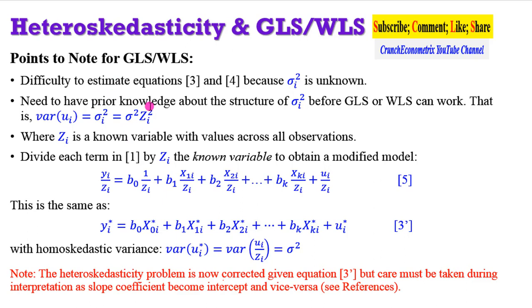In this instance, we are going to reconstruct the variance and multiply it by a known variable. This known variable is expected to have values across all observations, talking about an independent variable. So having the known variable, you divide the entire equation 1 by that known variable, as shown in equation 5. So this transforms the model to what you can see in equation 3 prime. So equation 3 prime is the same thing as equation 3 under the GLS and WLS approaches. But now we know the structure of the variance being depicted by a known independent variable. So once we can reconstruct that, we now have a homoskedastic variance as shown right here.